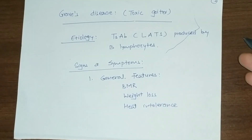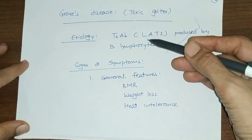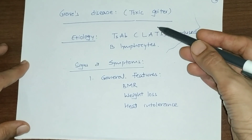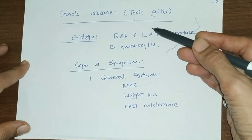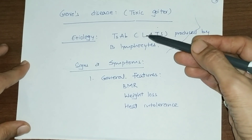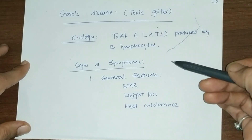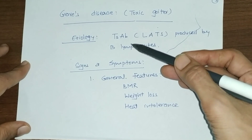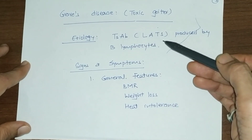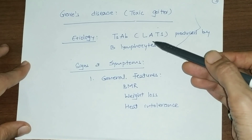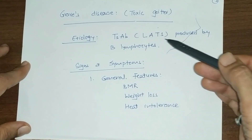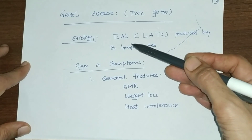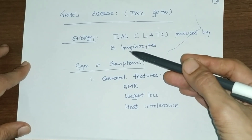Graves disease is also known as Basedow's disease or toxic goiter. Its etiology is autoimmune — it is characterized by development of thyroid stimulating antibodies, also known as long-acting thyroid stimulants. These thyroid stimulating antibodies are produced by B lymphocytes.